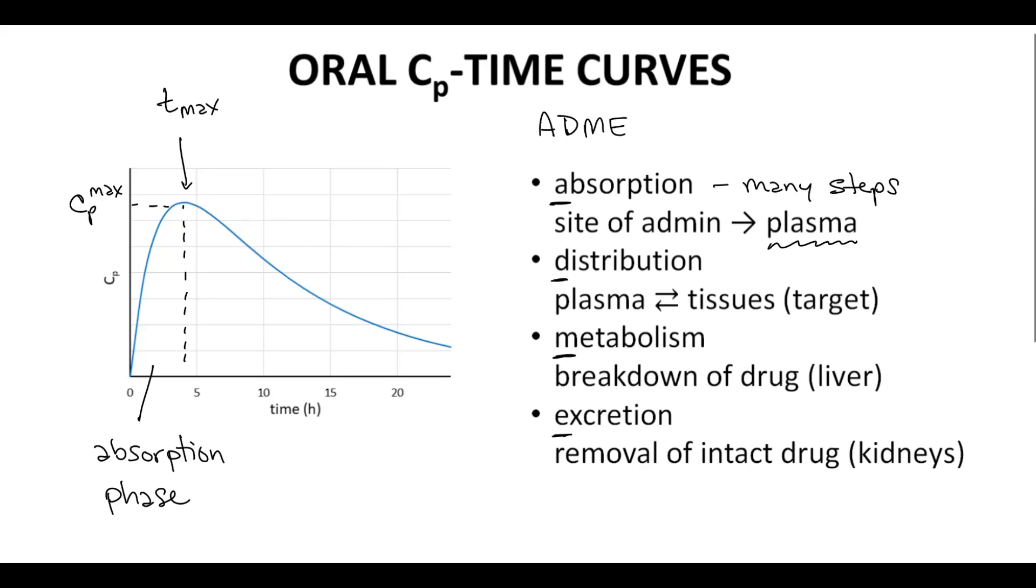Distribution describes the movement of a drug from the bloodstream, from the plasma, to the different tissues of the body, including the site of the drug's intended target protein. Distribution also describes the movement of the drug from its target back into the plasma. For oral drugs, before Tmax, distribution is mostly occurring from the plasma into the tissues. After Tmax, distribution is mostly from the tissues back to the plasma.